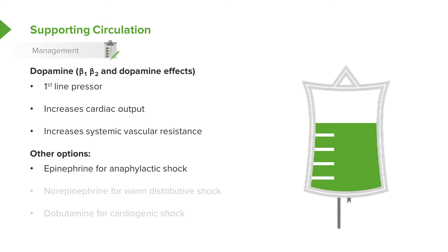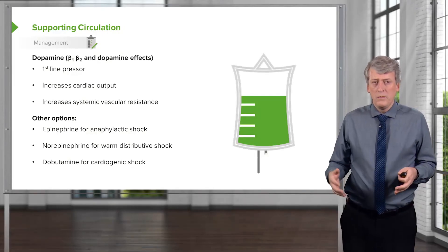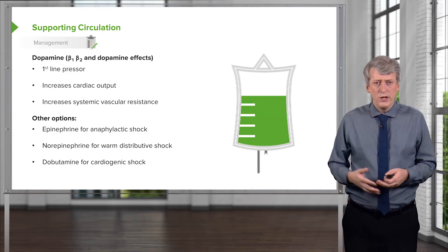Other options include for anaphylactic shock, we'll give epinephrine. We sometimes give norepinephrine for a warm distributive shock though norepinephrine is rarely a first-line agent for blood pressure support. And for cardiogenic shock, we may give dobutamine. Sometimes we're not sure what's going on before the dopamine is already on board and then we can switch agents.